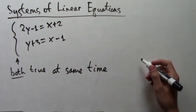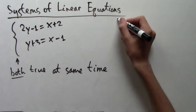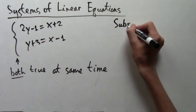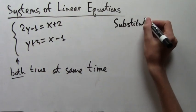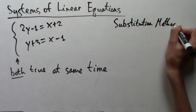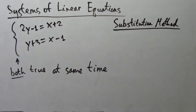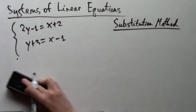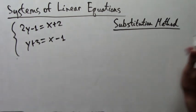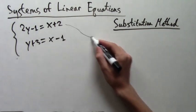So the substitution method takes one variable, and you have to solve for it from one of the equations. So we're going to take just the first equation, 2y minus 1 equals x plus 2. And we'll rewrite it here under the substitution method. And we're going to solve for x.